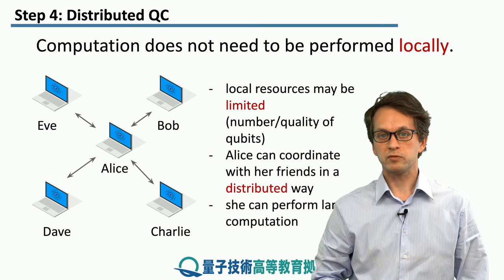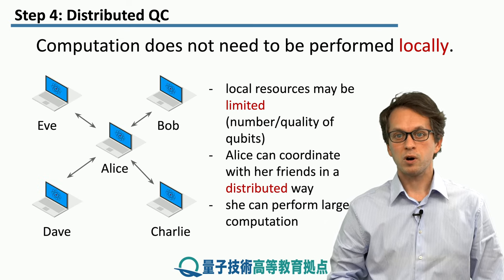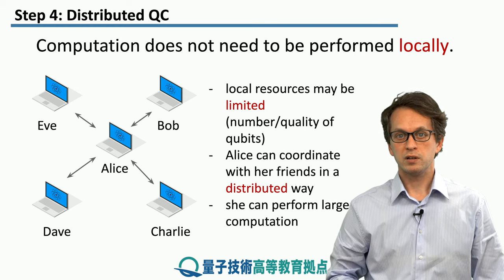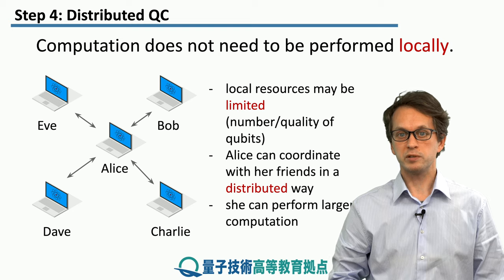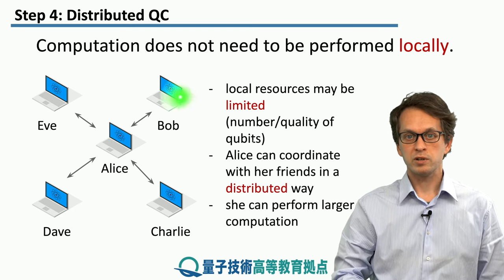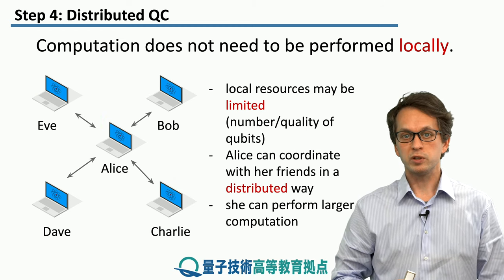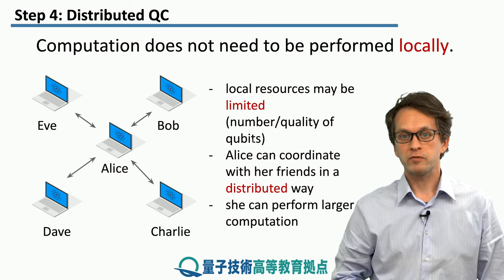What she can do is contact her friends — Bob, Charlie, Dave, and Eve — who are also in possession of some limited computational resources. They also have some small quantum computers. And together they can coordinate their resources and perform a larger quantum computation compared to if Alice did it only locally.